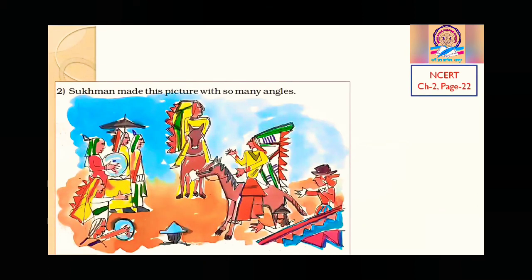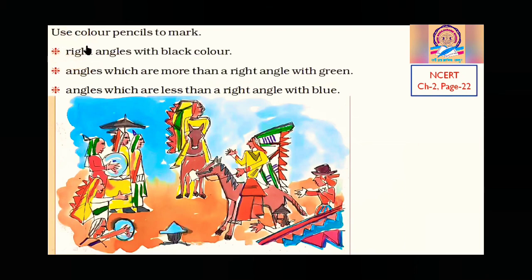Now see this picture — Sukhman made a picture with so many angles. You will see many angles: with fingers, with the horse, with the cap — angles are everywhere. What we have to do: use color pencils — black for right angle, green for more than right angle, and blue for less than right angle. You can find these at home and use the pencil to fill the shapes.